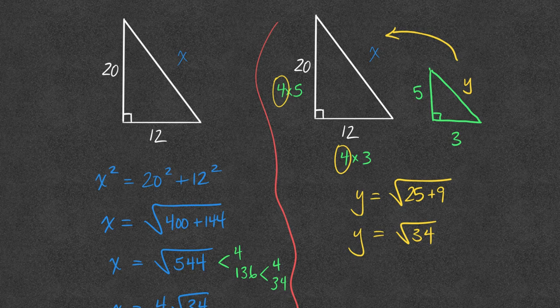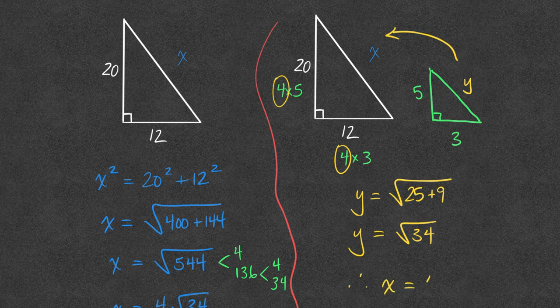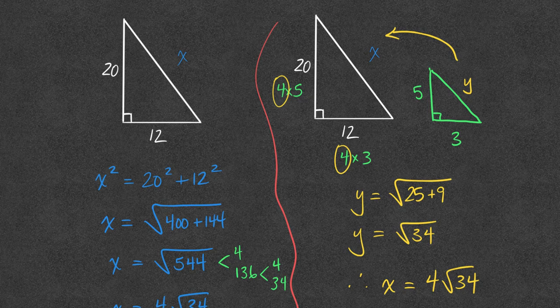So if I want to blow that back up, enlarge it, then I know that x has to be 4 times the hypotenuse on the smaller triangle. 4 root 34.